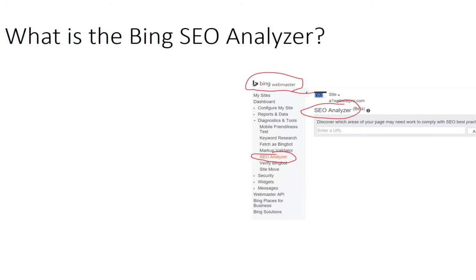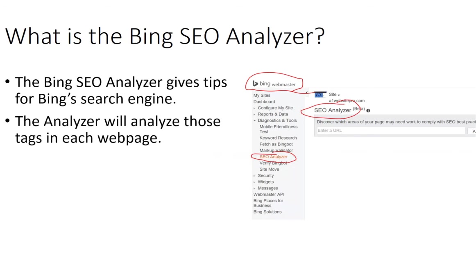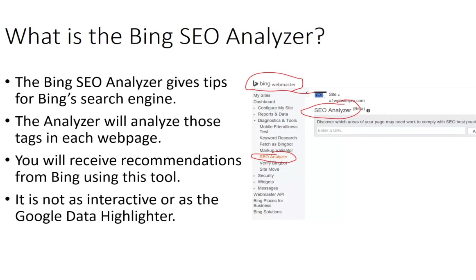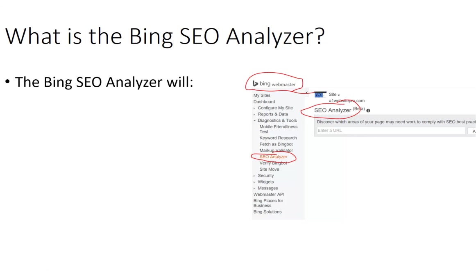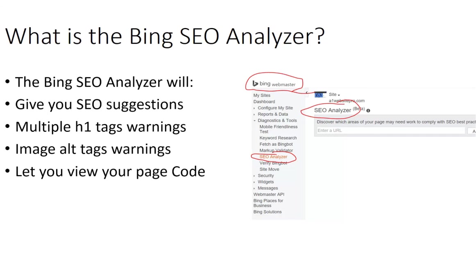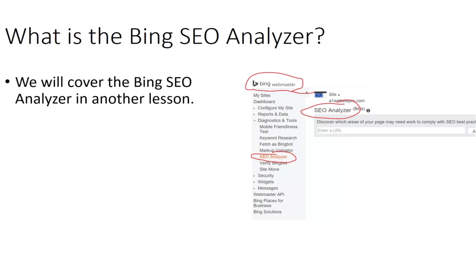This brings us to the Bing SEO Analyzer. The Bing SEO Analyzer gives tips for the Bing search engine. The analyzer will analyze the tags on each web page and you'll receive recommendations from Bing. It's not as interactive or thorough as the Google Data Highlighter. It will give you SEO suggestions — like if you have multiple H1 tags it'll give you a warning, or if you're missing alt tags on images it'll tell you. It also lets you view your page code. We're not going to cover it deeply now; we'll do that in a later lesson, but it's important that you have it set up.